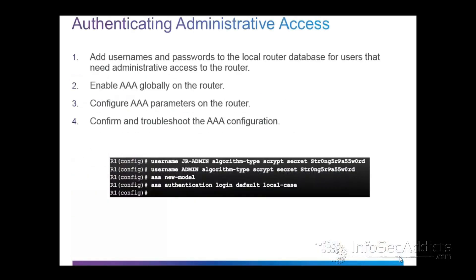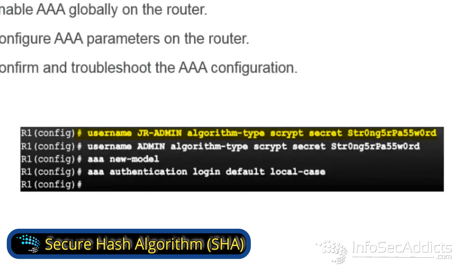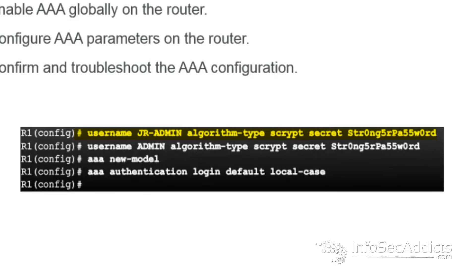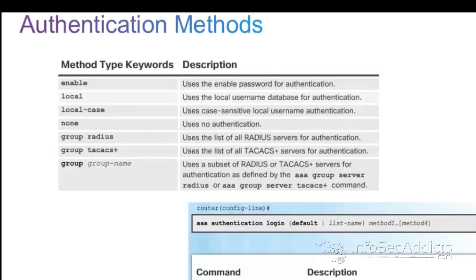On your local device, you can create a group. In this case, we're going to create a group called junior admin. You say username JRAdmin, algorithm type SCrypt — SCrypt is basically SHA. We'll create admin and a junior admin and give them both strong passwords. Then you say AAA new model, and then AAA authentication login default local case. So you want all of the authentication to be local, and it's case sensitive — that's what local case means.